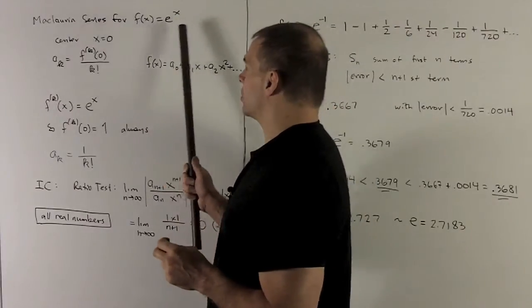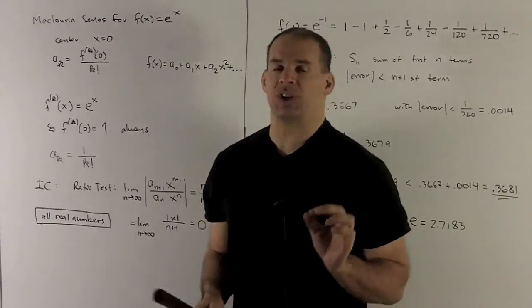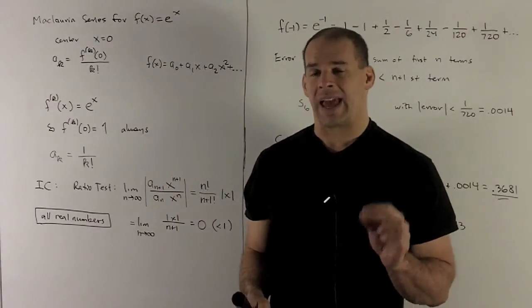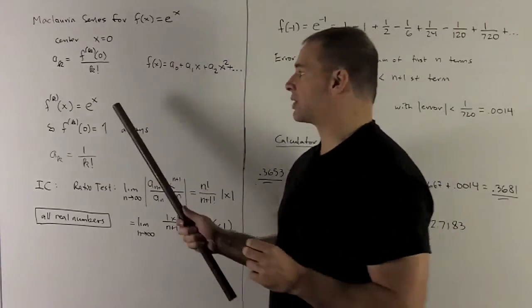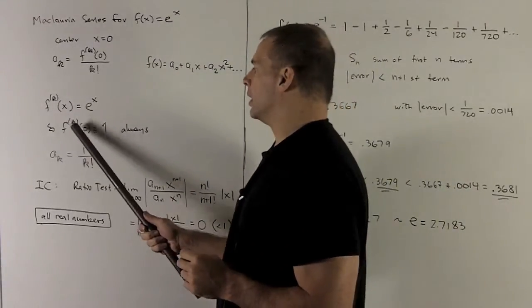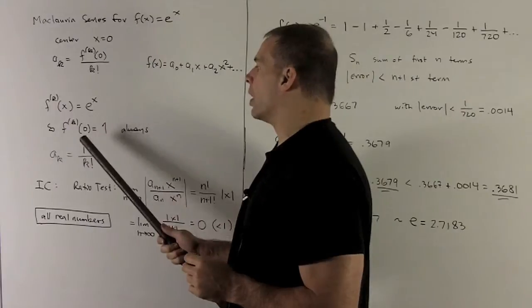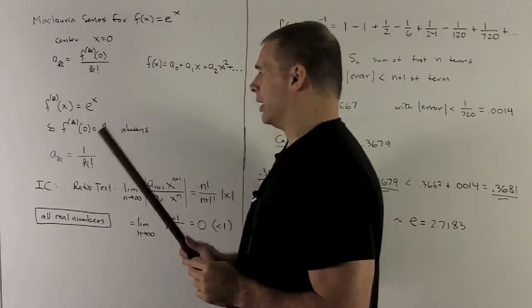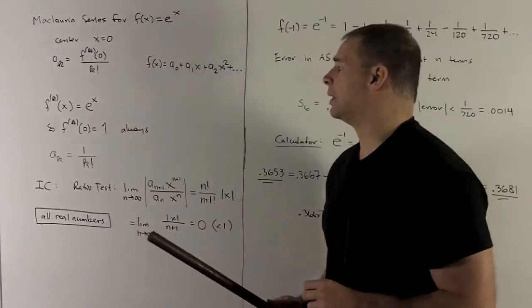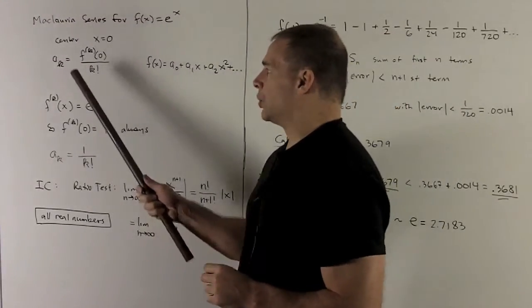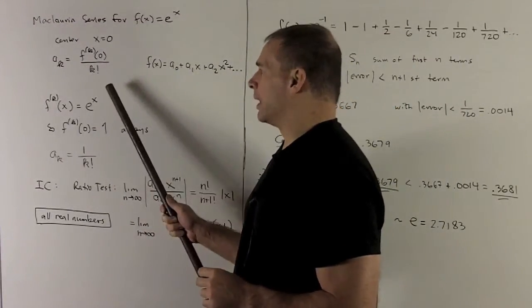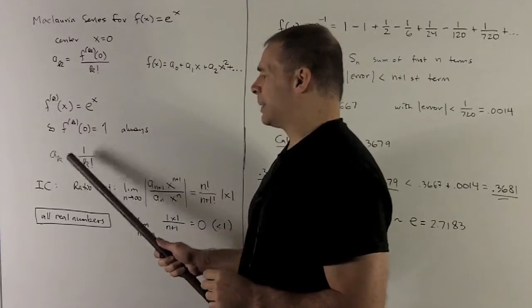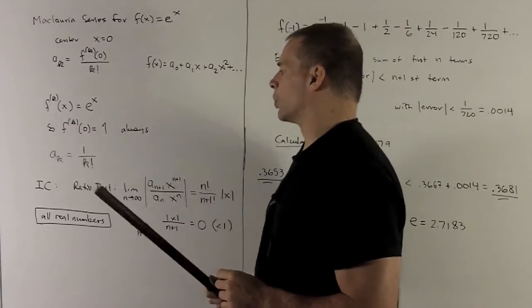In this case, it doesn't matter how many times you take the derivative of e to the x, the answer is always e to the x. So if I put a zero in here, we're going to have e to the zero, and so the kth derivative of f evaluated zero is going to be one for all k. So if we put that into our Taylor coefficient formula, I'm going to wind up with a sub k equals one over k factorial.